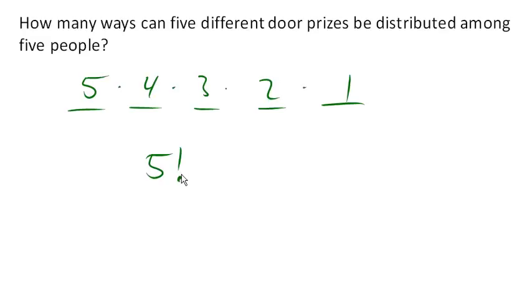And if you can find the factorial button on your calculator, it'll make your life a little easier here than hitting multiplication five times four times three times two times one. But either way, we come up with 120 different ways to distribute those prizes.